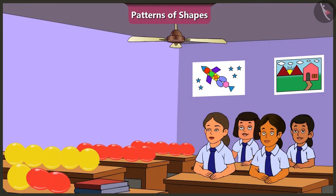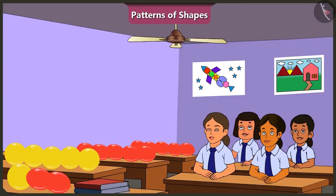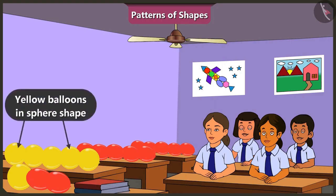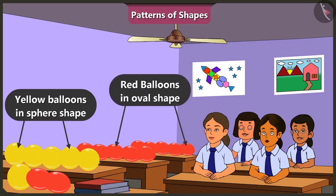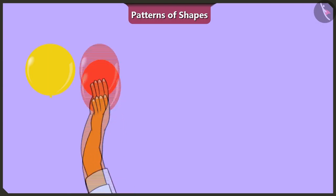Ma'am, can we decorate the wall with balloons? Absolutely, decorate it. Come on, Binny. Let us decorate this wall with balloons in spear shape and oval shape. Here are some yellow balloons in the spear shape and red balloons in the oval shape. Binny, let's create a special pattern out of these. Let's put one yellow spherical balloon and one red oval balloon like this.